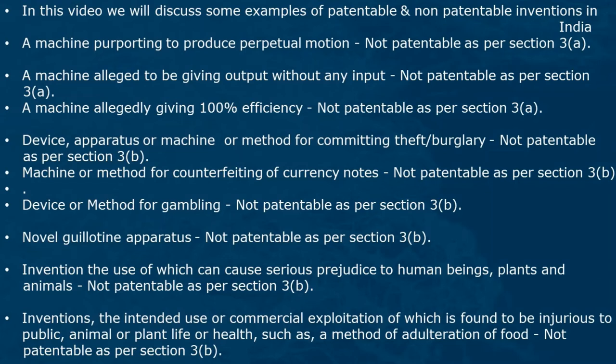In this video we will discuss some examples of patentable and non-patentable inventions in India. A machine purporting to produce perpetual motion is not patentable as per section 3a. A machine alleged to be giving output without any input is not patentable as per section 3a. A machine allegedly giving 100% efficiency is not patentable as per section 3a.